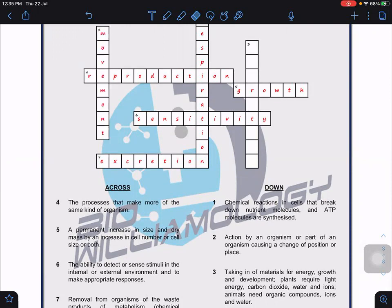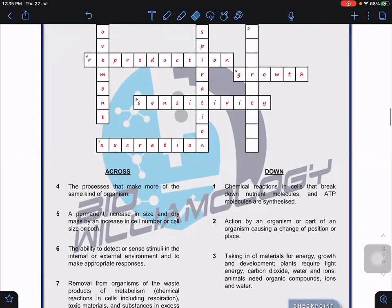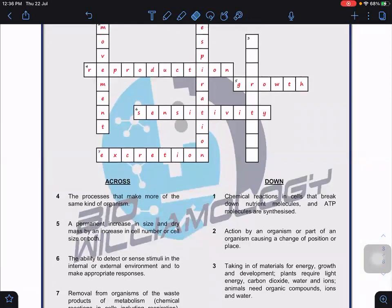Number three: taking in of materials for energy, growth, and development. For example, plants require light energy, carbon dioxide, water, and ions. Animals need organic compounds, ions, and water. The answer is nutrition.